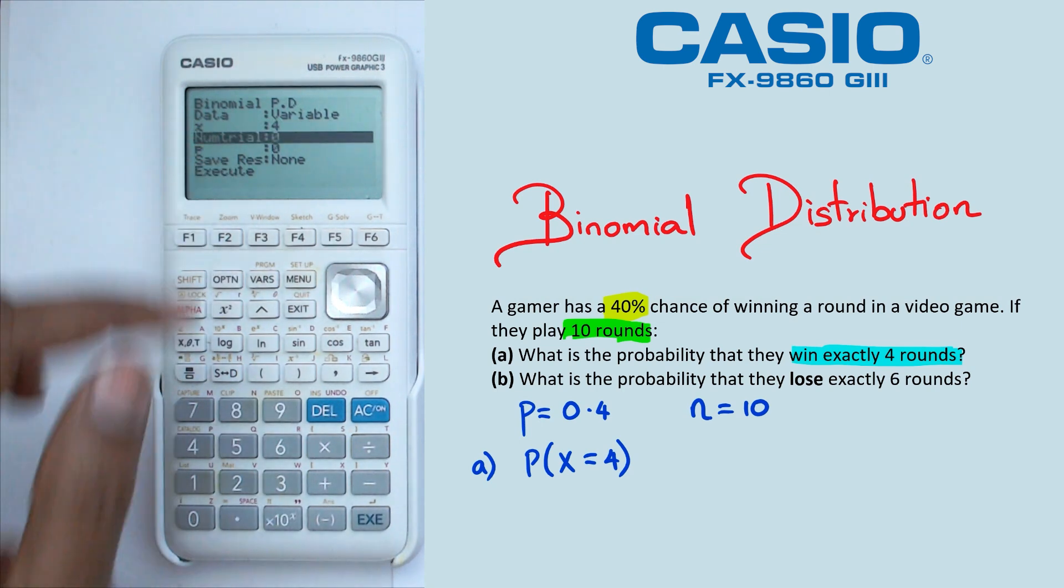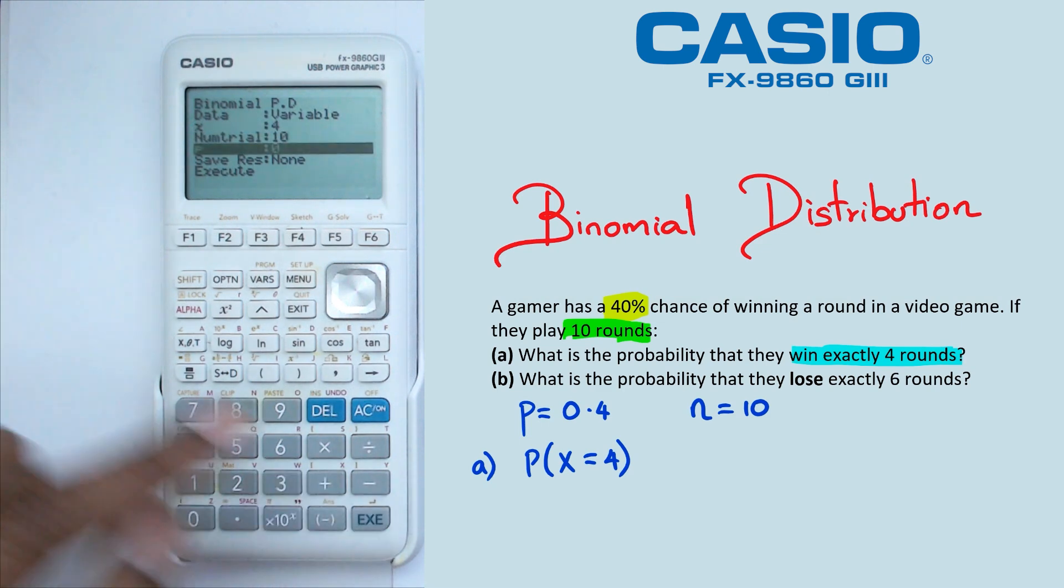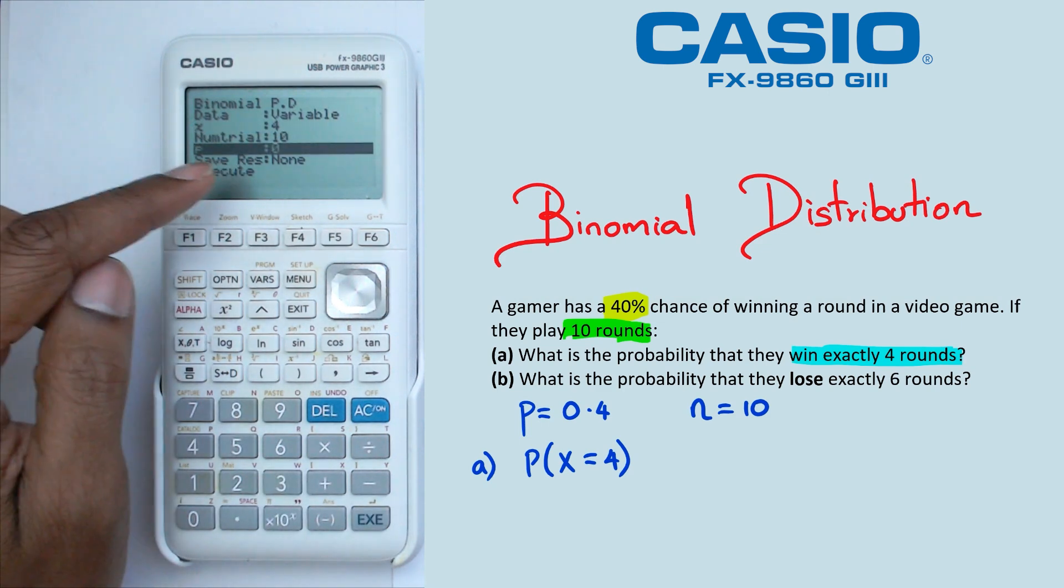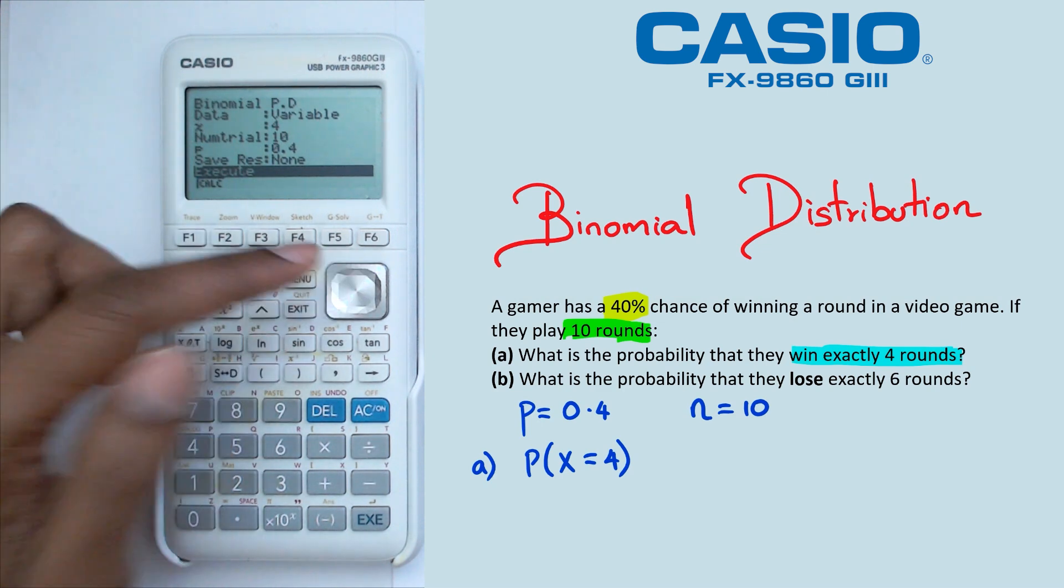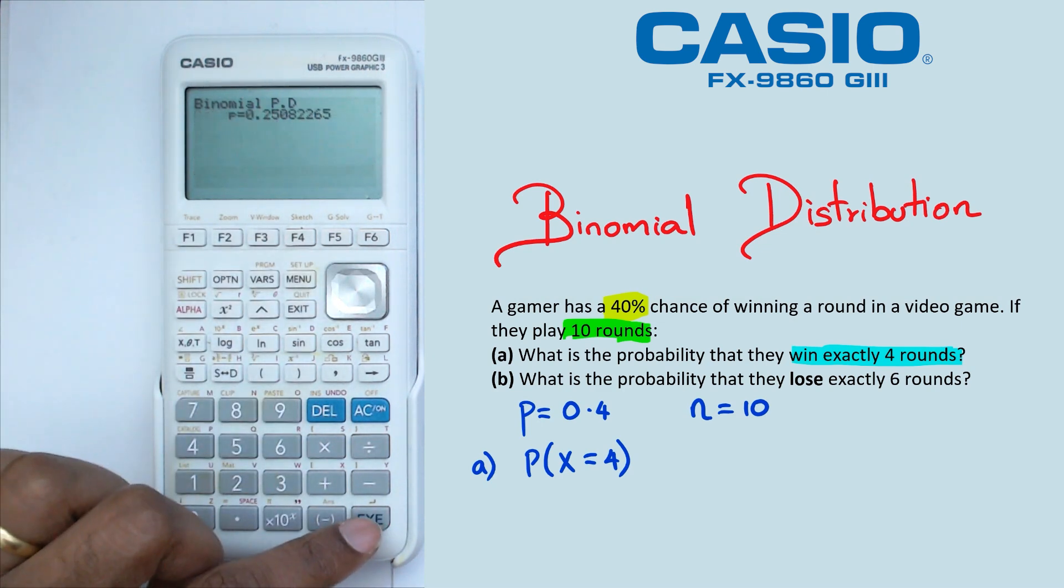Then our number of trials is equal to 10, and then the probability of success in this case is 0.4. Go down to execute, or you could just press exe straight away. And you are going to get 0.2508 as the probability.